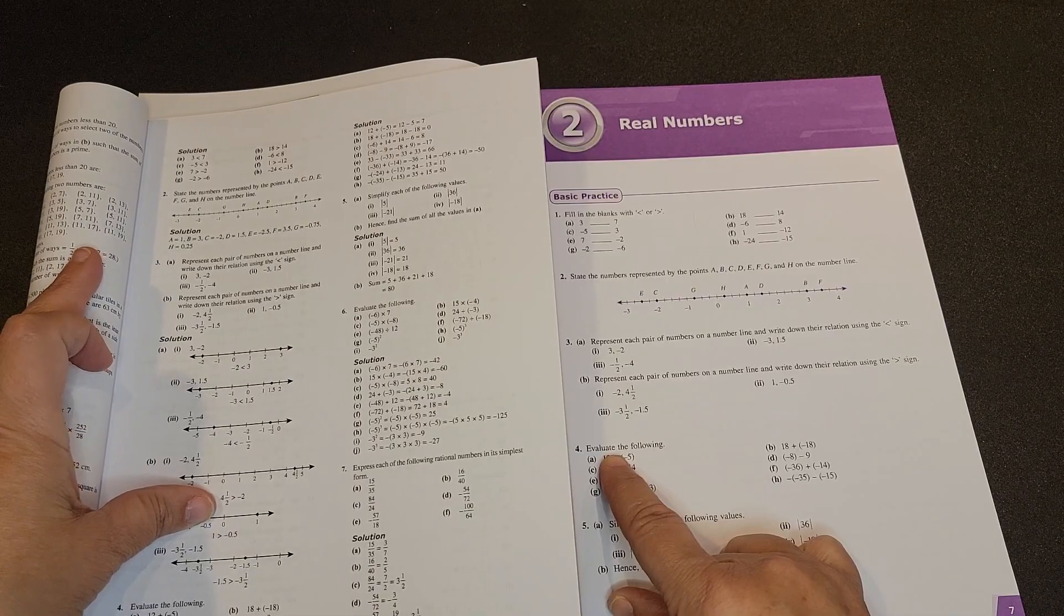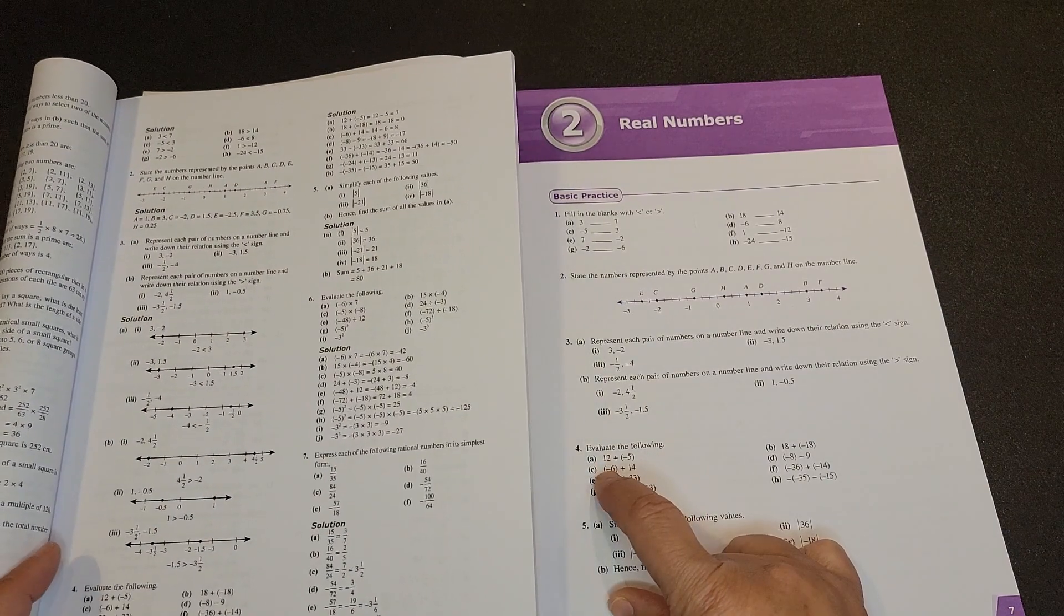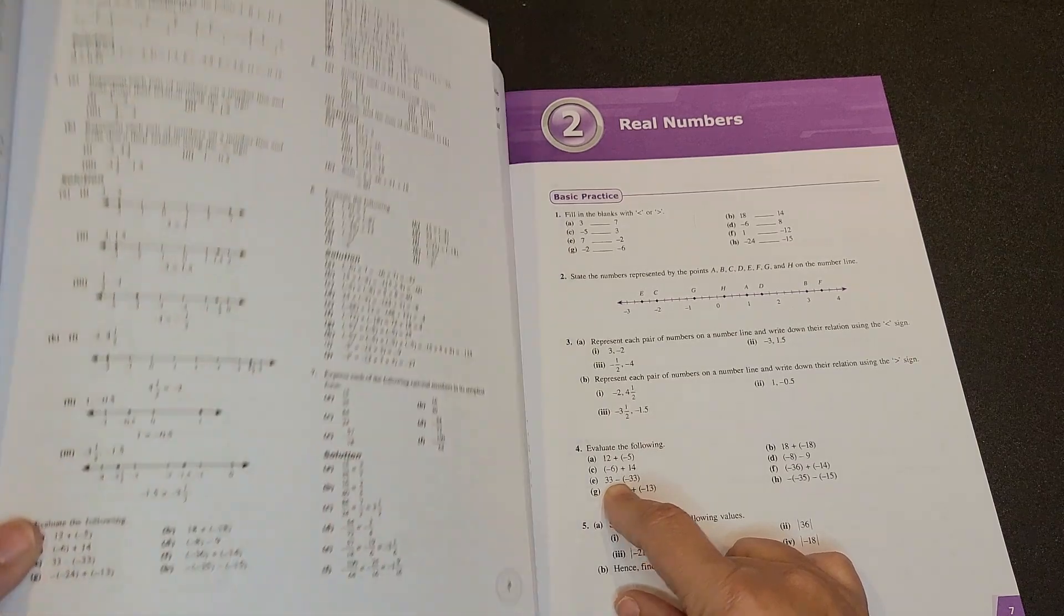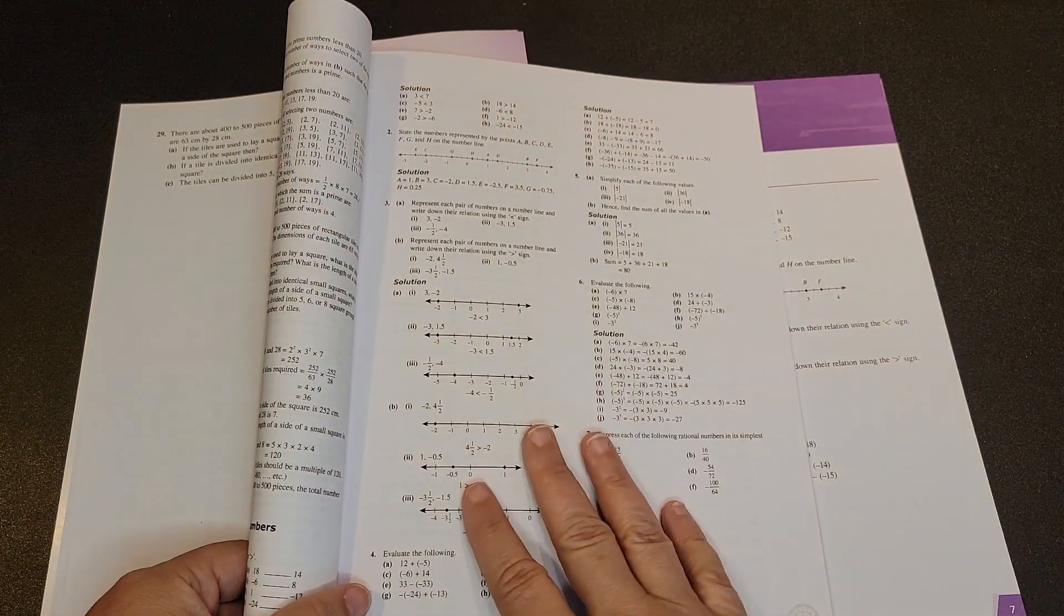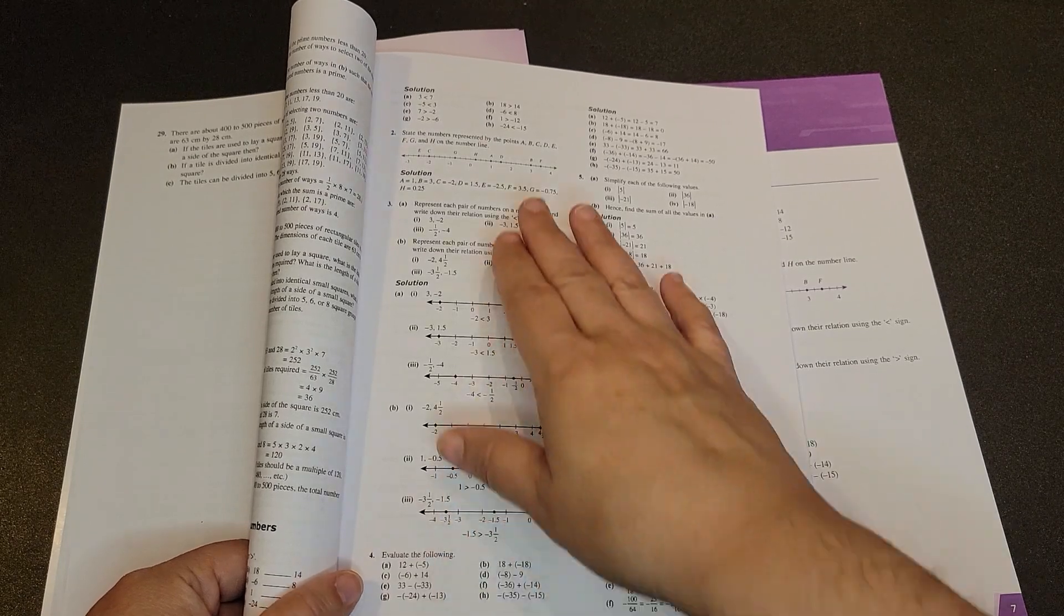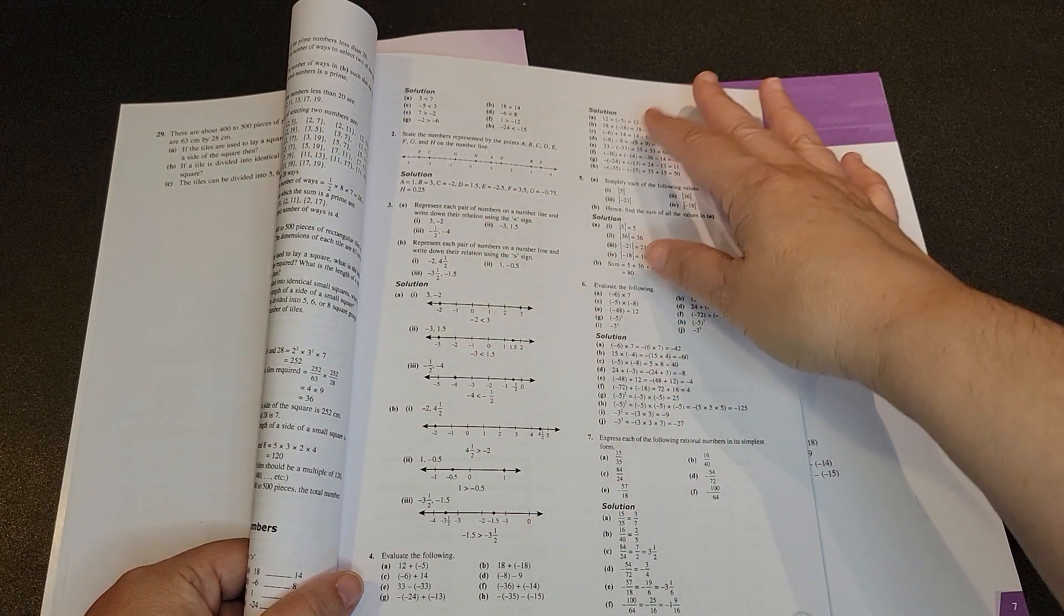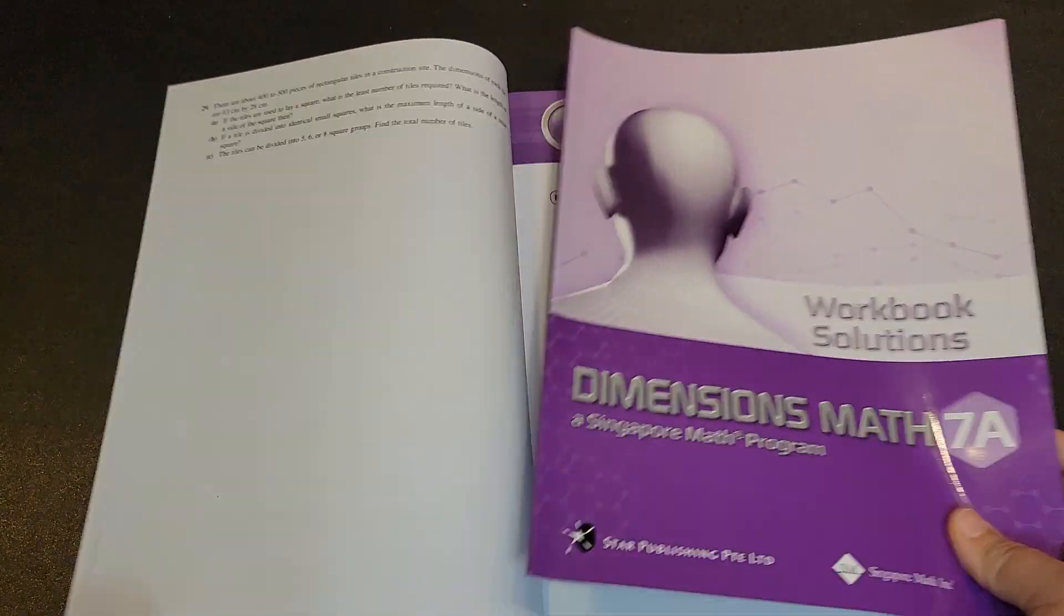When we were in six, they didn't have the questions in the solutions. It was purely the solutions. So you were going just kind of blindly as to the questions. You had to look them up in the individual workbook. But in seven, you don't have to do that. They have the questions, and then they have the solutions. And I really like that change from six to seven.